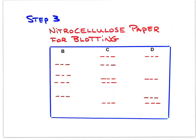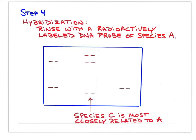The gel is then blotted with nitrocellulose paper so that the DNA molecules of each fragment in each of the three lanes stick to the blot paper. The last step involves rinsing the blot paper with a radioactive probe primer from species A, and the radioactivity appears most with species C. So species A and C are the most closely related. Repeating this process could elucidate the relationships among all four species.